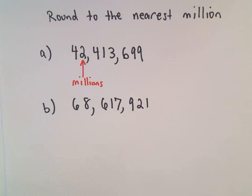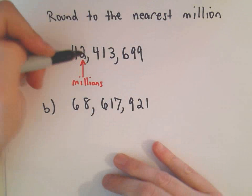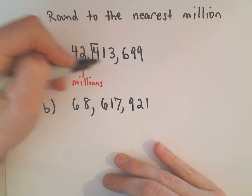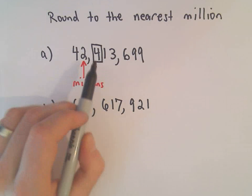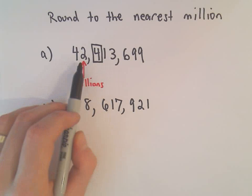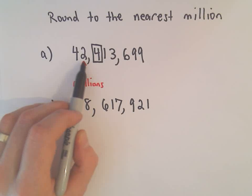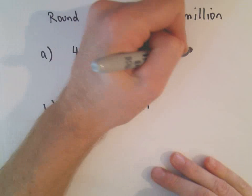And again, according to our little recipe that we have, it says we look one number to the right. Well, in this case, the number to the right is four. And if it's four or smaller, we do not change our number that we're going to round to. So I'm going to leave the two alone.